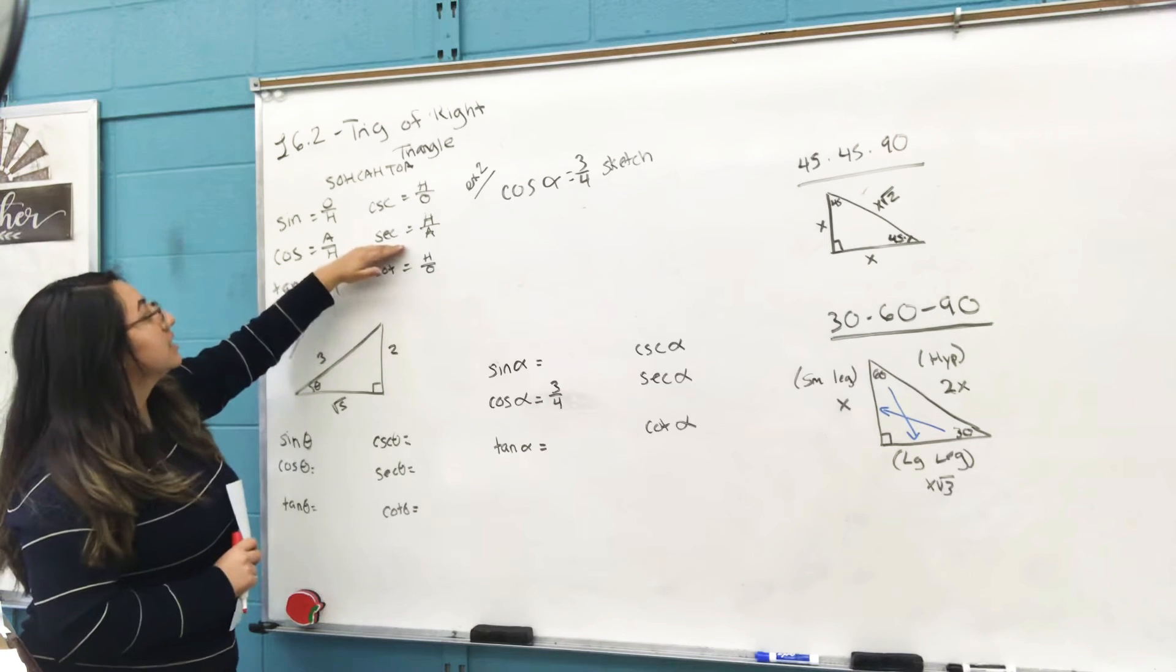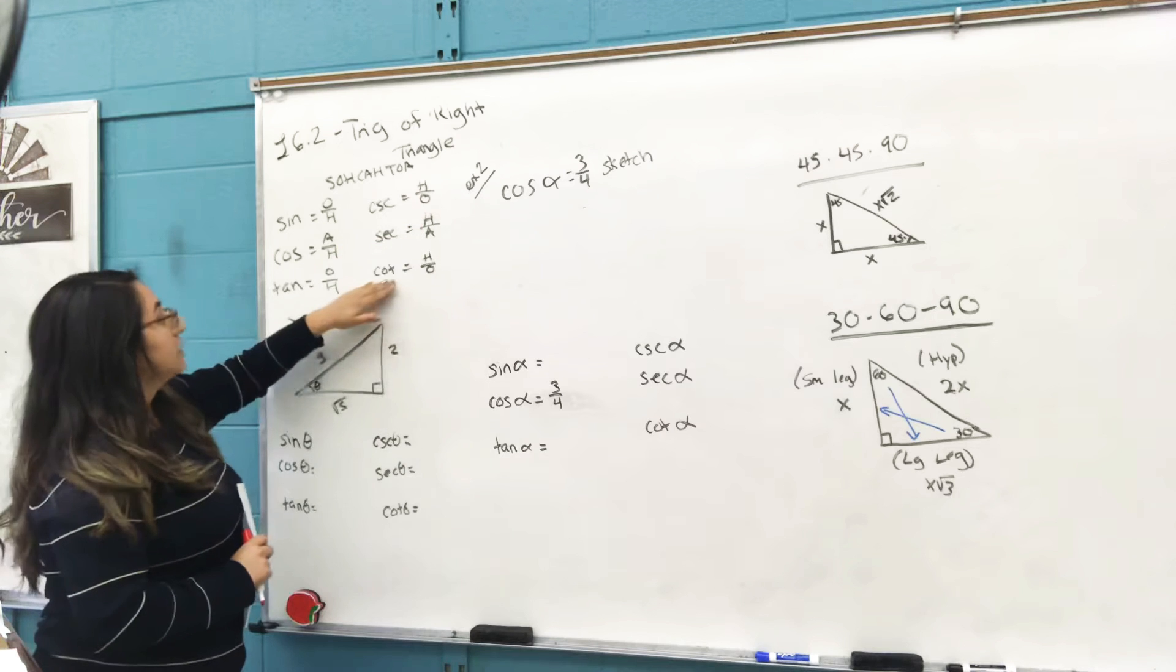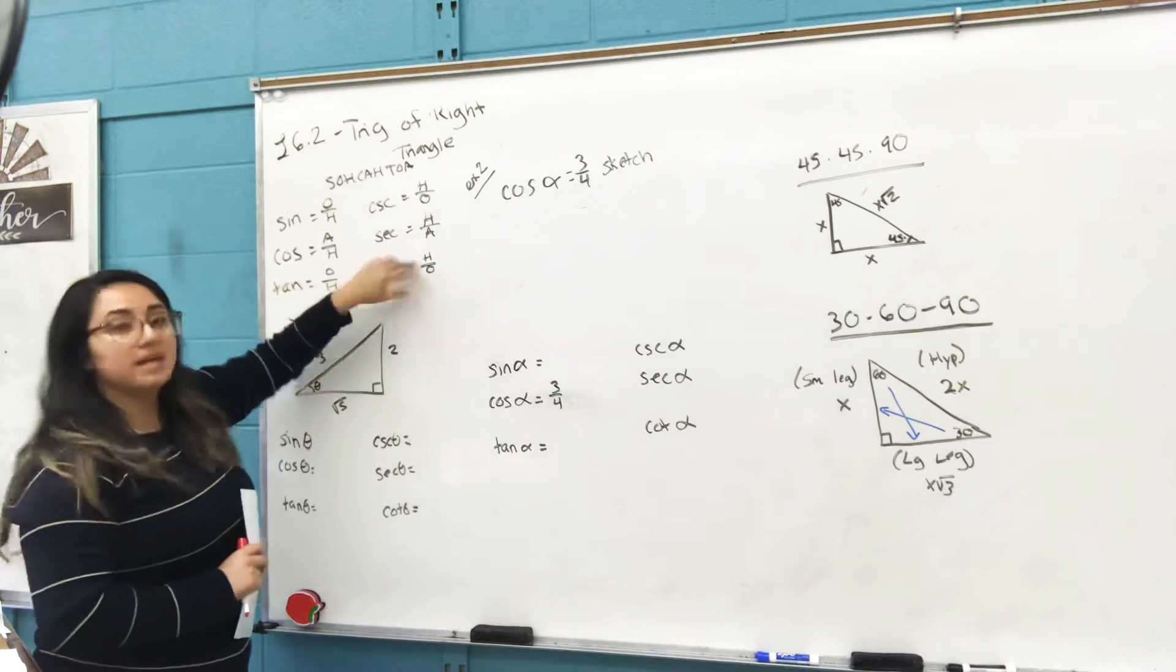Cosecant: all you do is flip it. That's what you get right there. The reciprocal of cosine is secant, and then you just flip it and you get h over a. Cotangent is the reciprocal function for tangent; you flip them too and you get that.